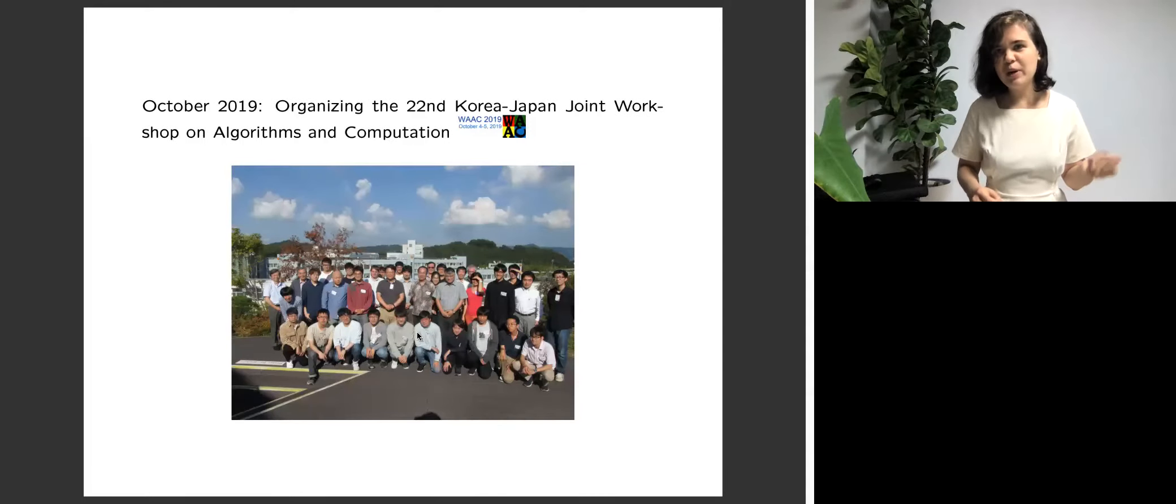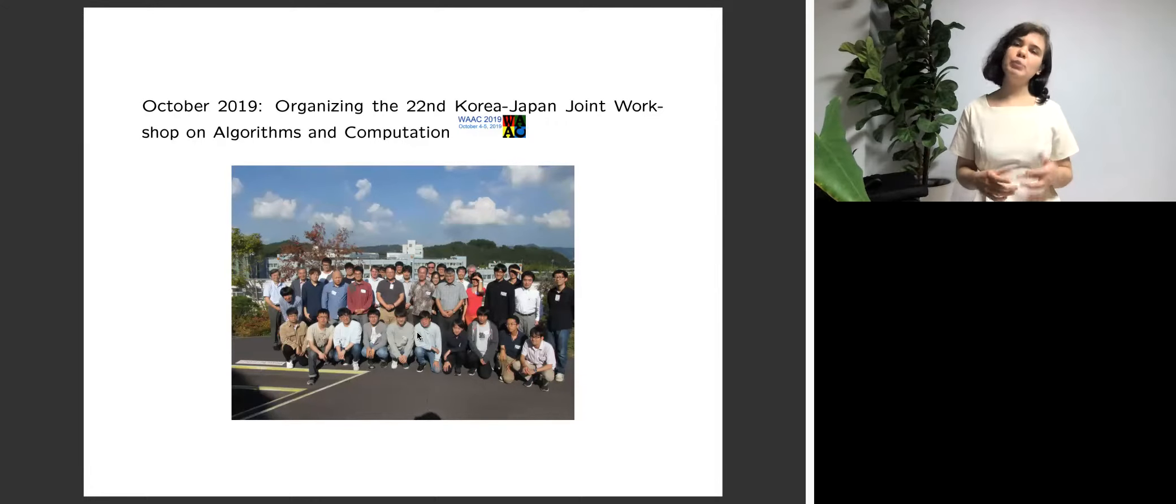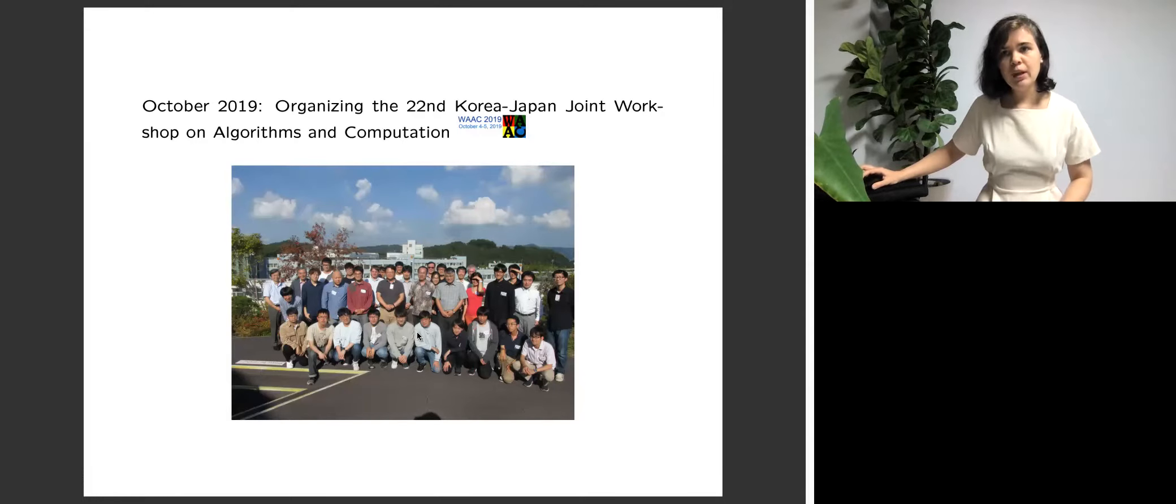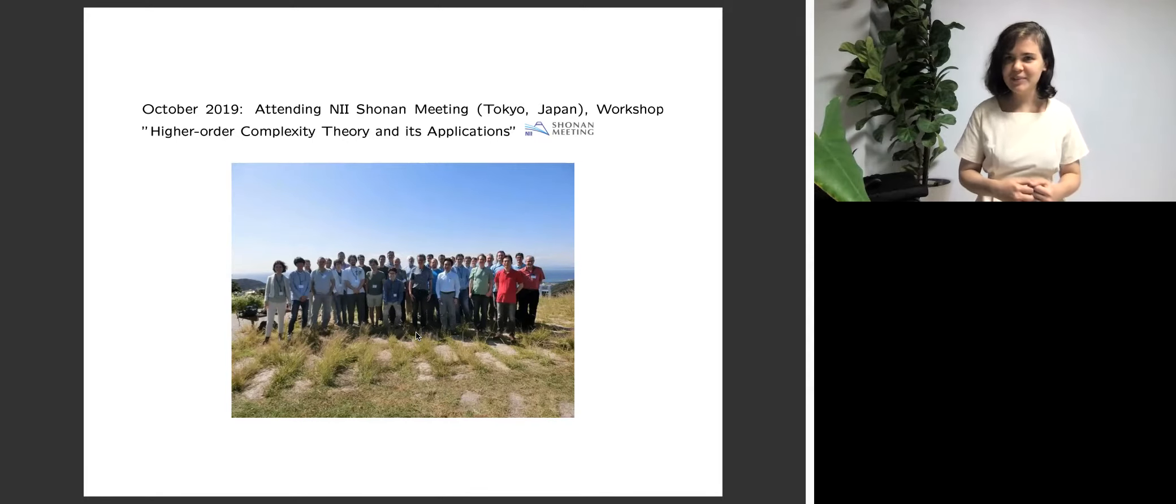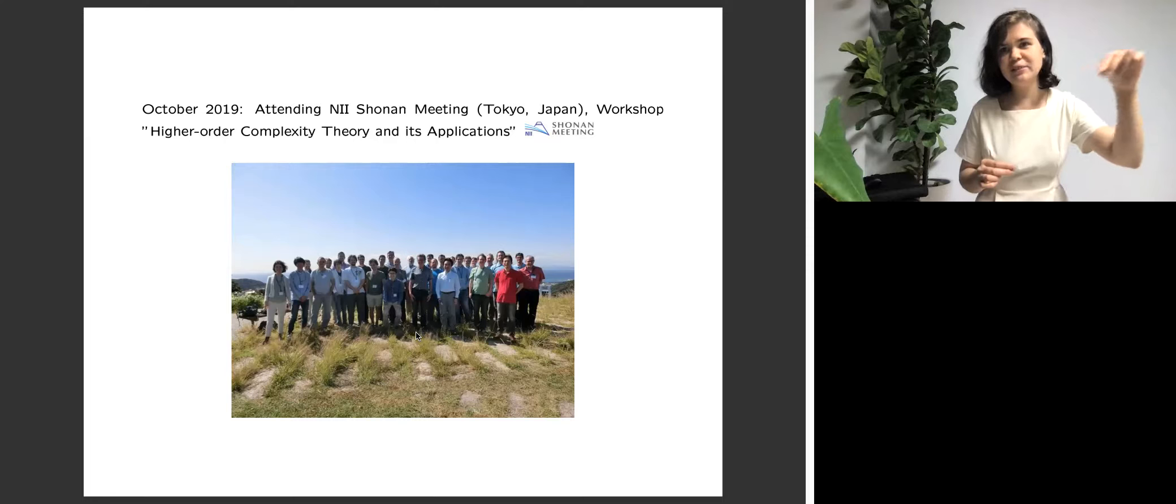Let me highlight some of our most memorable events. This is the Korean-Japanese workshop we organized last year at KAIST. It was a workshop on algorithms and computation and brought together many excellent researchers, mainly from Korea and Japan, also some researchers from Europe. It was a very nice two-day workshop. And right after this workshop, some members of our group went to the Shonan meeting in Japan, which was also a very memorable event. Here's Mount Fuji sign behind us. This workshop was devoted to higher order complexity theory and its applications. Higher order means that we were working on developing the framework of complexity not just for functions, but functionals like functions acting on functions. It's a very difficult topic, but this event helped to achieve significant progress on it.